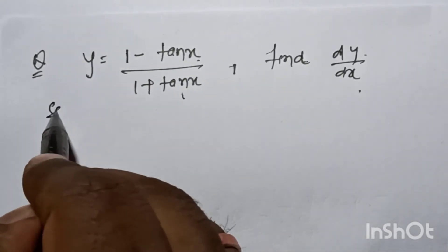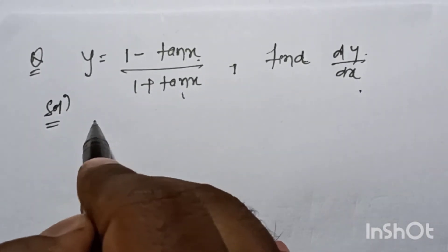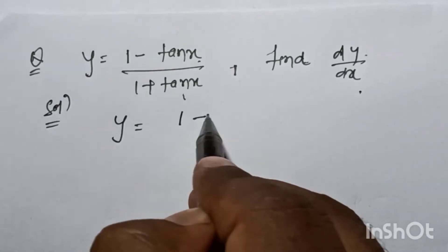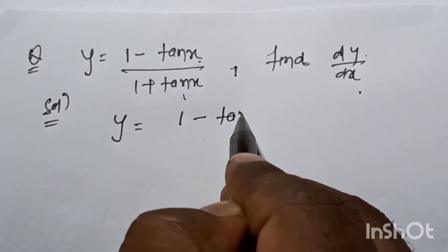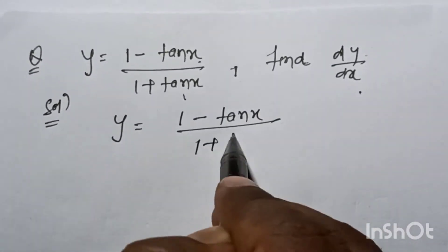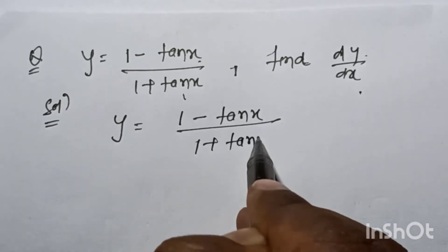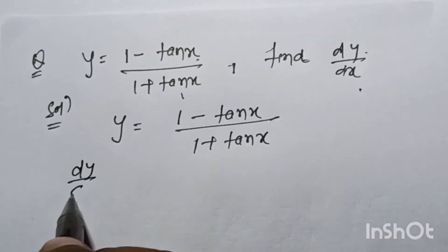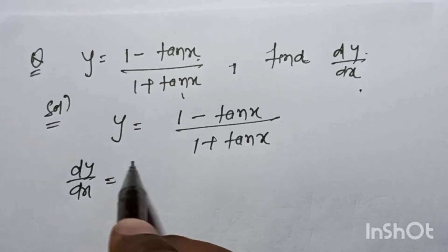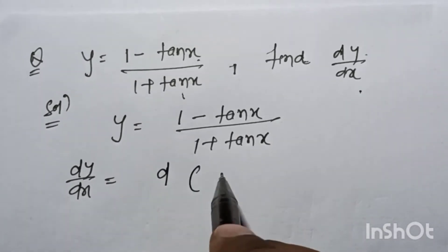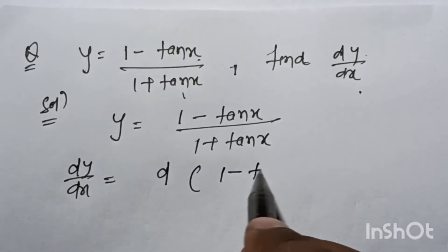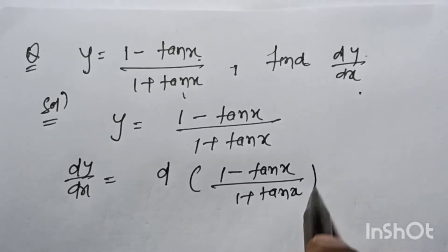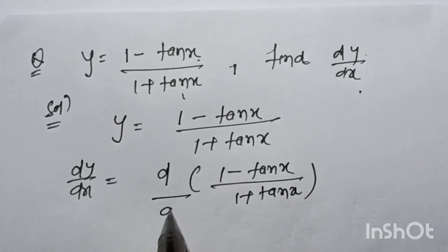Let's write down the solution — how to solve this question. y is equal to (1 minus tan x) by (1 plus tan x). We need dy by dx, that is the derivative of (1 minus tan x)/(1 plus tan x) with respect to dx.